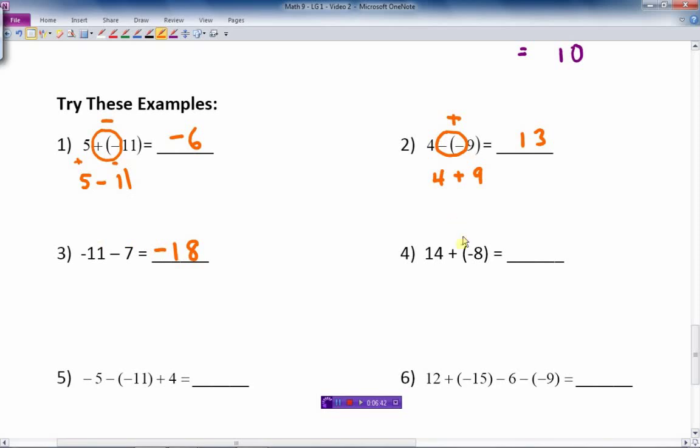Number 4. Those two signs are different. They're together between the two numbers. And so they become a minus sign, which gives me 14 minus 8. And I end up getting 6 as my answer. 14 minus 8 is 6. Positive 6. 14 is bigger than 8.